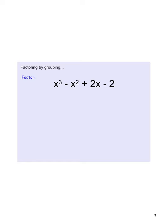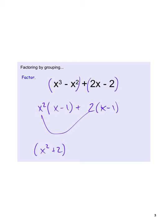For the next example, I group the first two terms and the last two terms. I pull out an x squared from the first group, leaving x minus 1. For the second group, I want x minus 1 as well, so I pull out a 2. Combining gives x squared plus 2 and x minus 1. Note that x squared plus 2 can't be factored further — 2 is not a perfect square, and the plus sign is problematic.